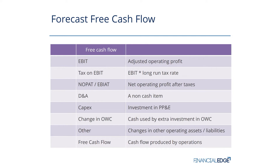At the start of our forecast free cash flow calculation, we have EBIT — that's our operating profit adjusted for any non-recurring items. But from that EBIT, we then subtract off tax on EBIT. Now that's not the same as your tax expense. We want to take EBIT and then multiply that by the long-run tax rate, your effective tax rate. That gets you to NOPAT — your net operating profits after tax, or EBIT after tax.